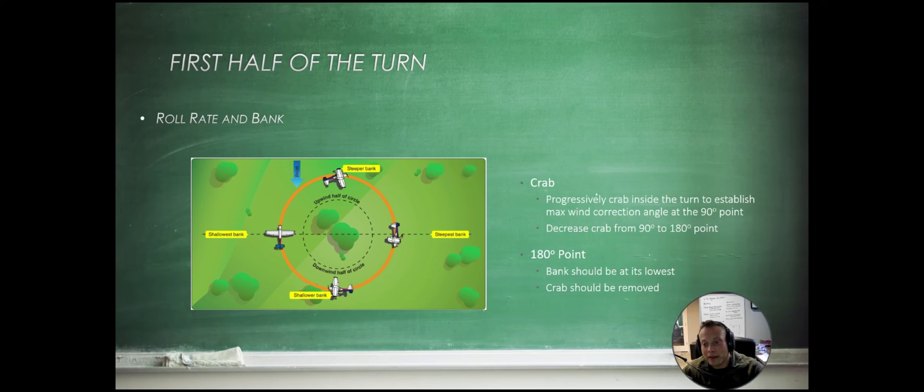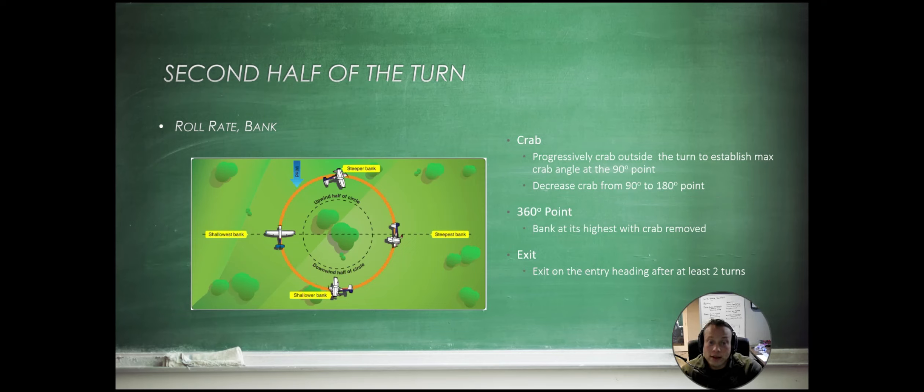Let's talk about crabbing. Progressively crab inside the turn to establish max wind correction angle at the 90 degree point. And then decrease from 90 to the 180 degree point. The 180 degree point, this is when your bank should be at its lowest or practically nose into the wind. So we really shouldn't be fighting the wind at all. It's just slowing us down at that point.